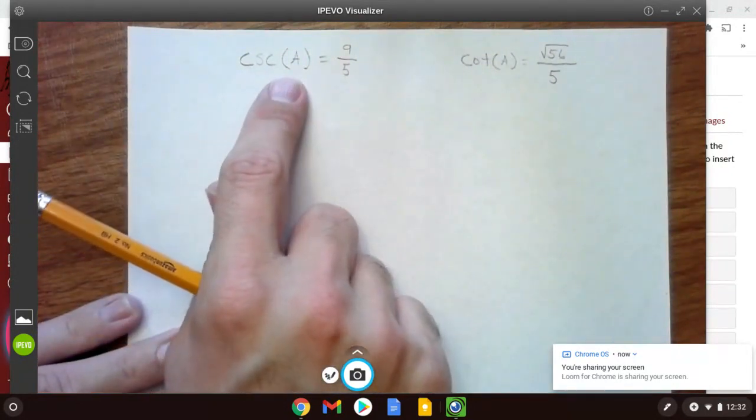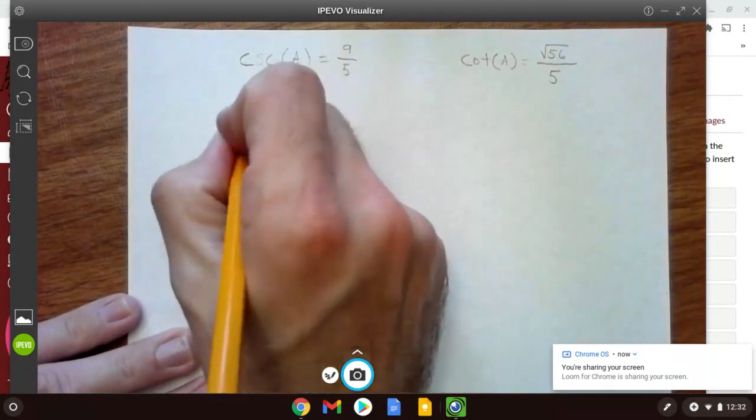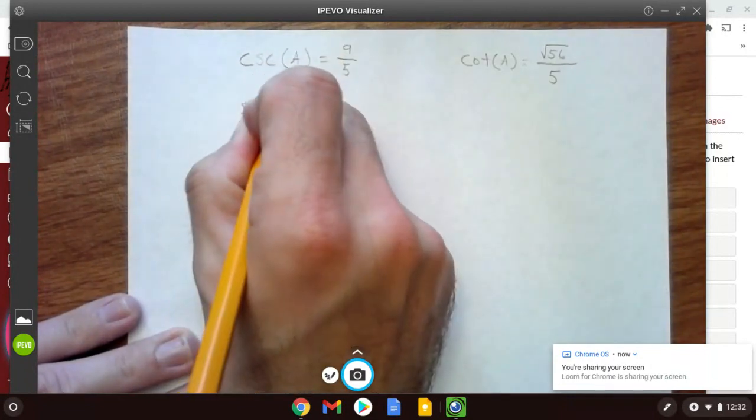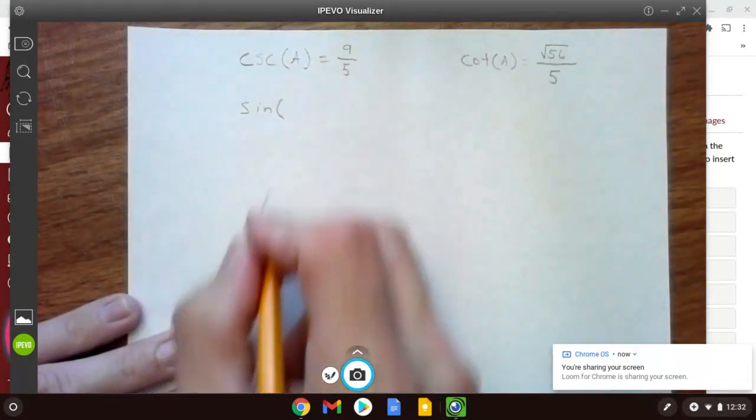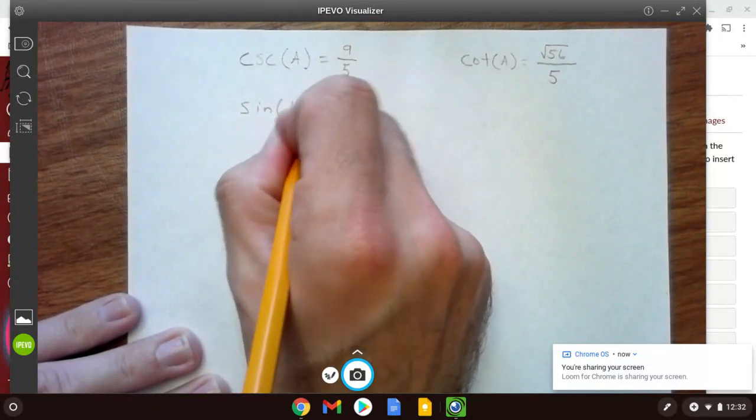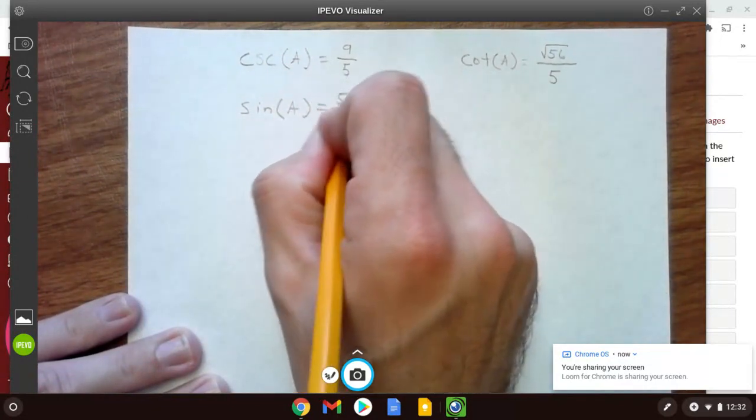So cosecant of a is equal to 9 over 5. That means that sine of a, remember it's the reciprocal of cosecant, and sine of a is going to equal 5 over 9.